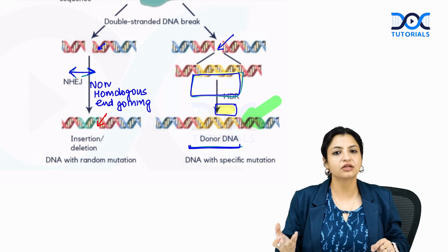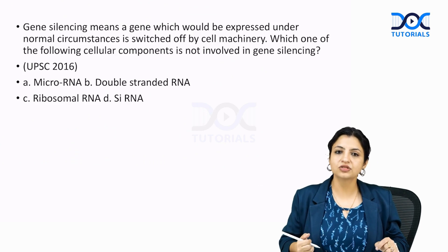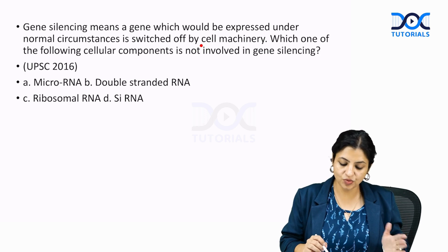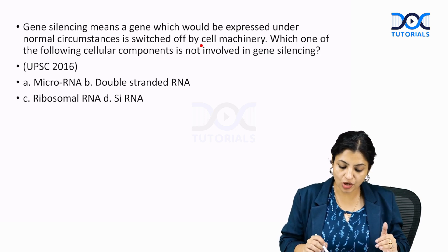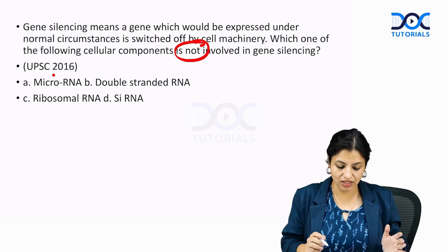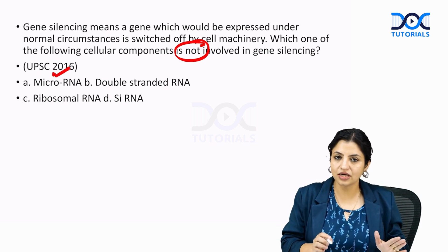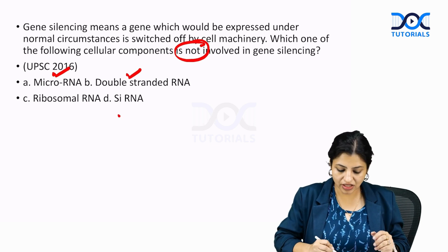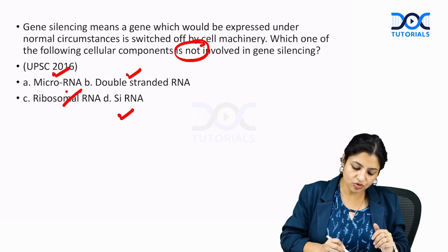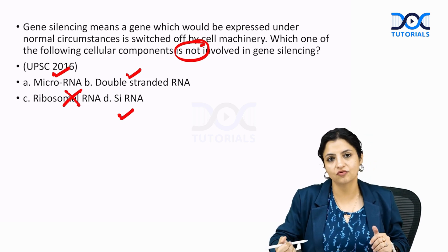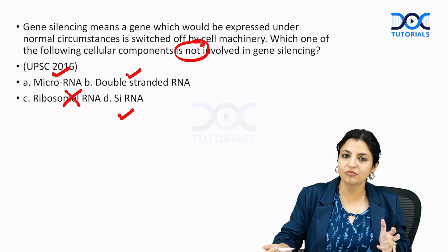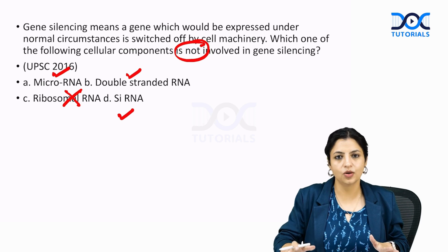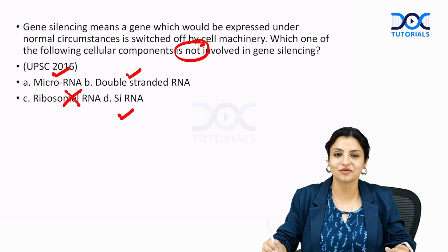Practice question: Gene silencing means a gene normally expressed is switched off by the cell machinery. Which cellular component is NOT involved in gene silencing? MicroRNA is a double-stranded RNA involved in gene silencing; siRNA is a synthetically made microRNA. Ribosomal RNA is single-stranded and is NOT involved in gene silencing. Everyone should be very clear on knockdown and knockout technology.